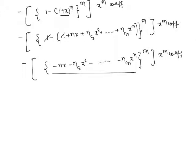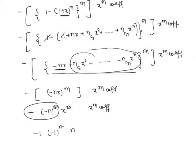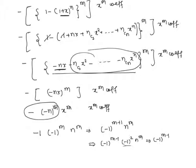In this expansion, only the term minus nx whole power m contributes to the coefficient of x power m; all other terms give higher powers. So we get minus of minus nx whole power m, which equals minus 1 into minus 1 power m into n power m, which equals minus 1 power m plus 1 into n power m, which simplifies to minus 1 power m minus 1 into n power m. Hence proved.